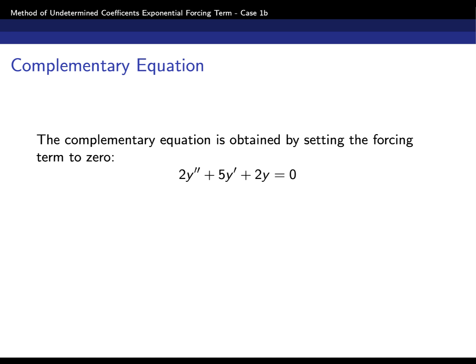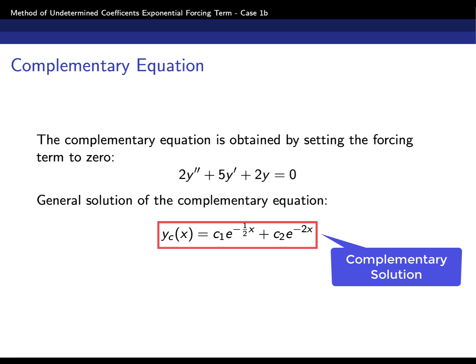Let's start the solution process. The first thing to do is write the complementary solution, which we get by setting the right-hand side of the equation to zero. We solve that homogeneous equation, find the characteristic equation and its roots, and that gives us the complementary solution: yc = c1·e^(-x/2) + c2·e^(-2x).